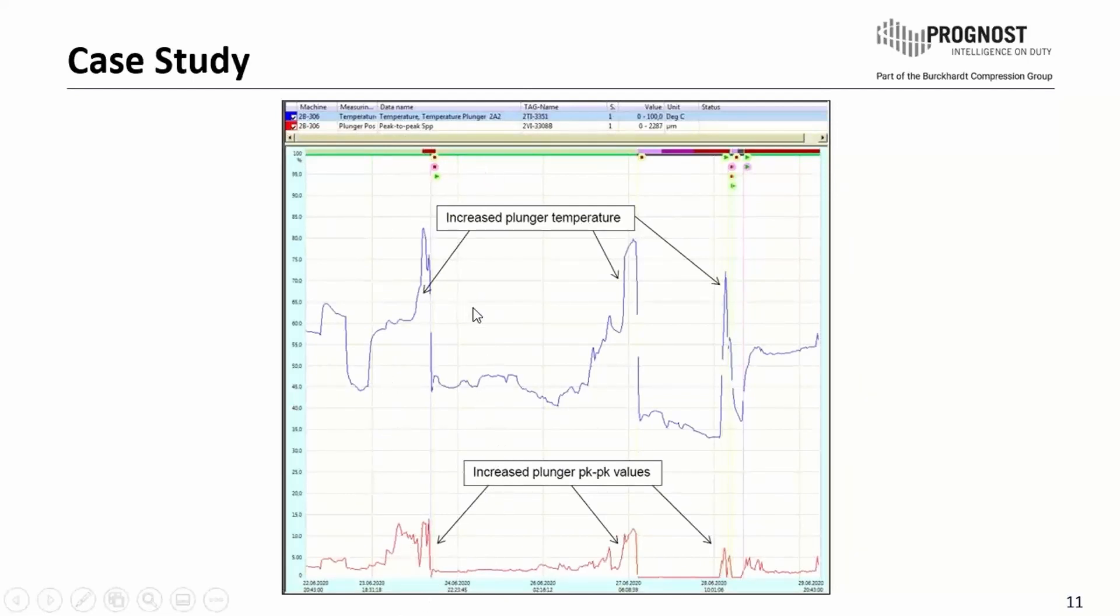We see in blue the plunger temperature. We will focus only to one of these peaks at this time. Here you see the machine was stopped and started directly. Also important, no parts were changed between the start and stop.